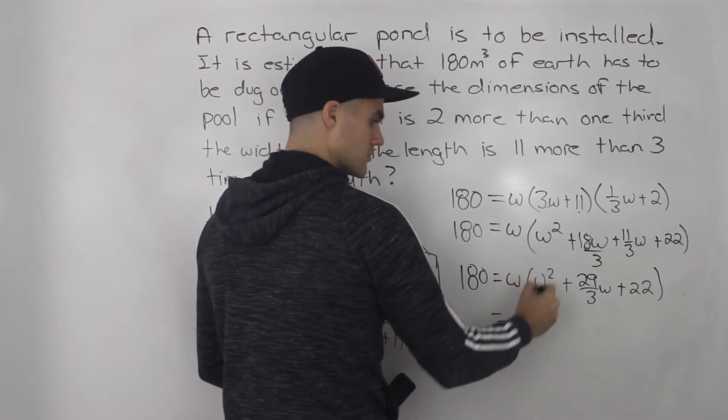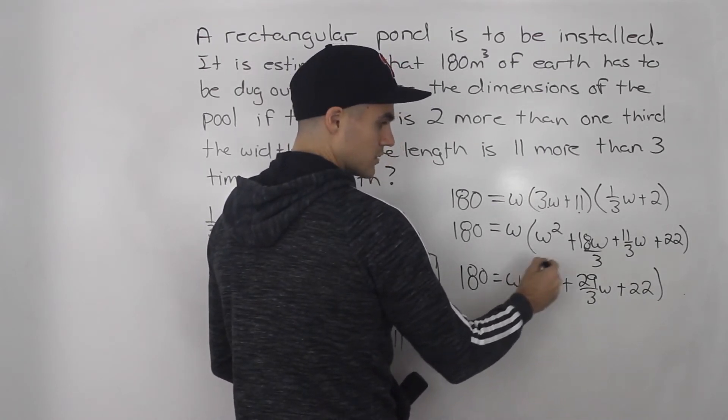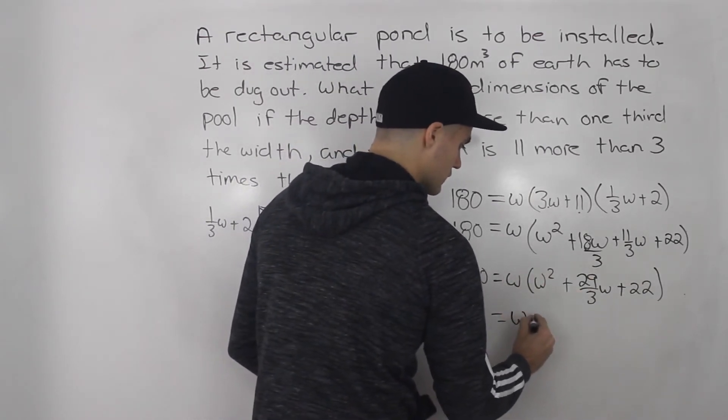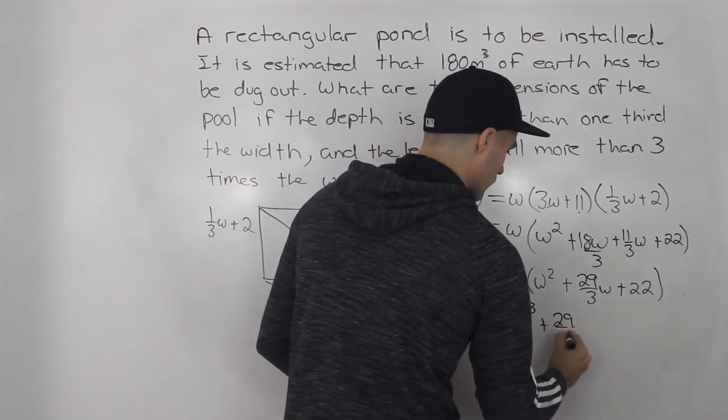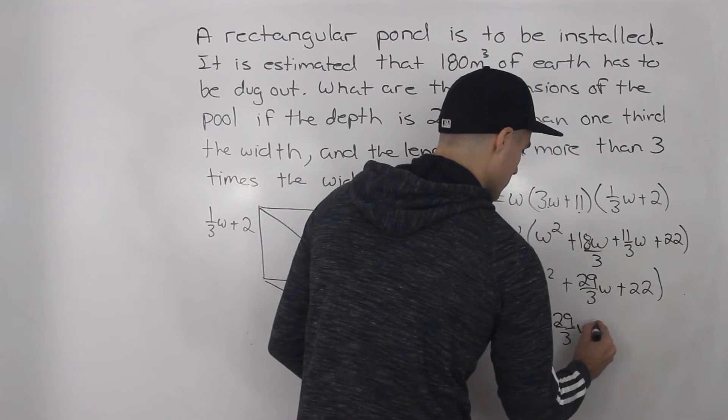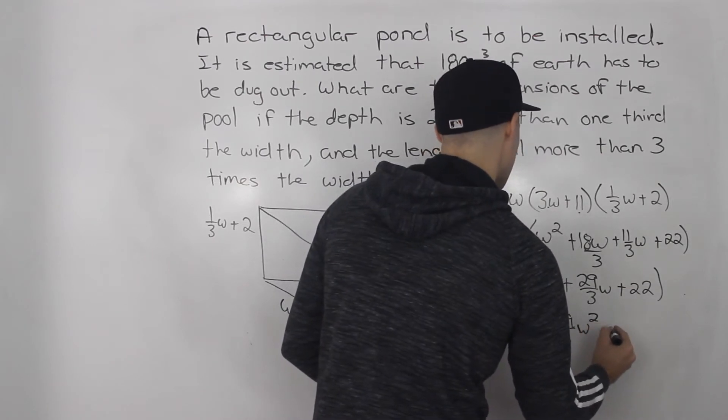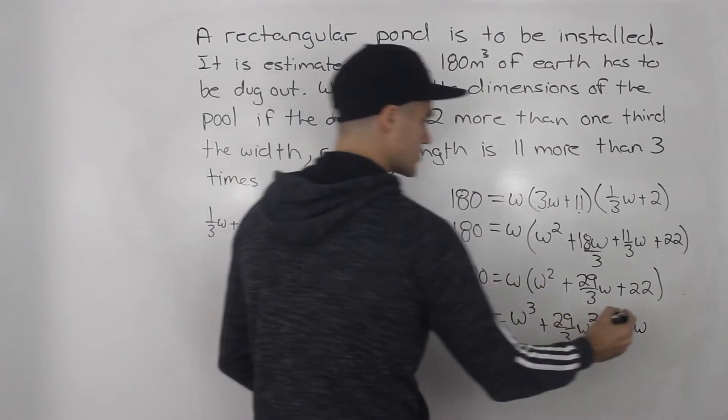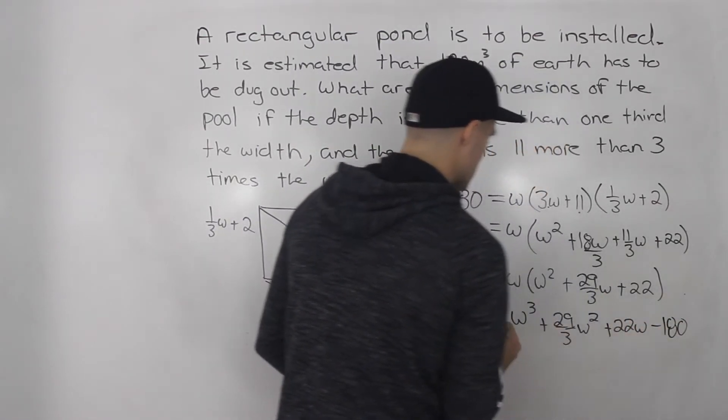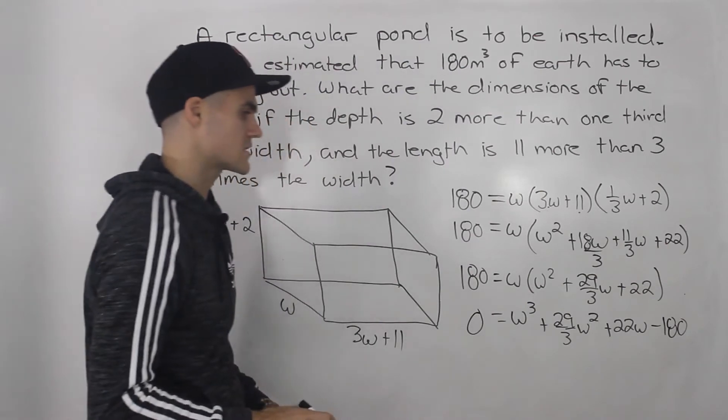Then when we bring this w, we distribute the w inside the bracket, we would have w cubed plus 29 over three w squared plus 22 w. And then let's bring this 180 over. So it becomes minus 180. And we're just left with zero on the left side.